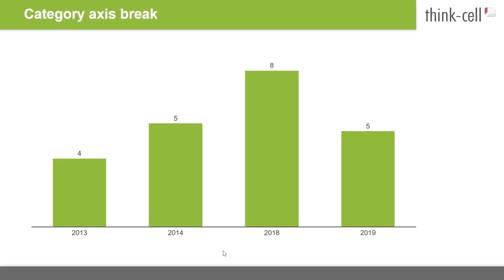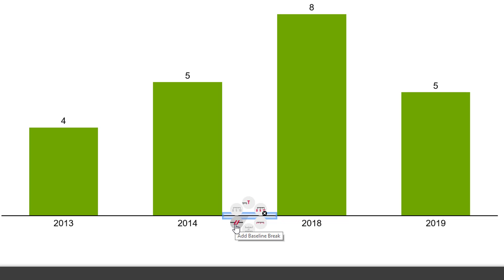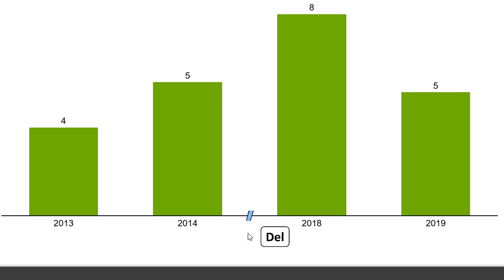If you would like to indicate a break in the continuity of the category axis scale, for instance because your data has a gap for certain years, just right-click onto the category axis between two columns and select Add Baseline Break from the context menu. A break shape is inserted into the baseline. If you want to delete it, just select it and hit the Delete key.